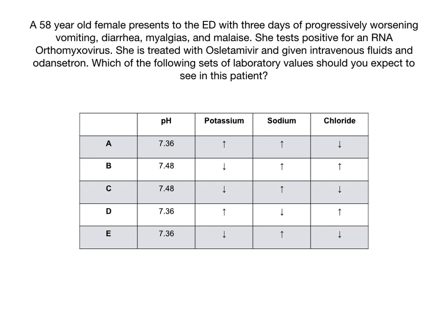The question reads: A 58-year-old female presents to the emergency department with three days of progressively worsening vomiting, diarrhea, myalgias, and malaise. She tests positive for an RNA orthomyxovirus. She is treated with oseltamivir and given intravenous fluids and ondansetron. Which of the following sets of laboratory values should you expect to see in this patient?